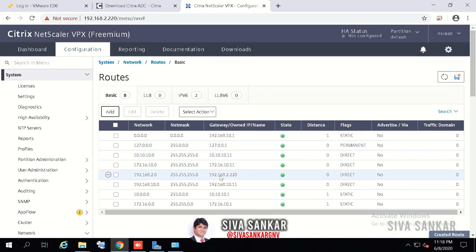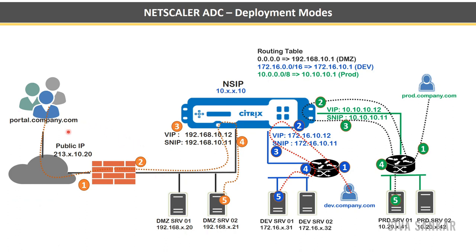Multi-arm mode implementation is now complete. Traffic from users hits the VIP, flows through the appropriate SNIP to back-end servers, and returns via the same path. This works because of the static routes created: a default route always points to the DMZ interface, two-arm mode uses a static route for back-end server subnets via the internal SNIP, and multi-arm mode adds per-zone static routes — each pointing to the gateway of that zone's SNIP.